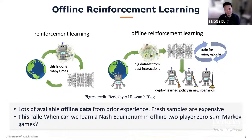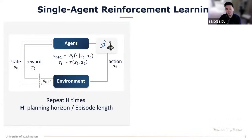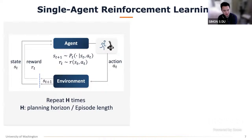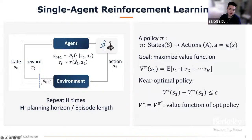Before getting to the two-player setting, let me first review what we know about offline single-agent reinforcement learning. In single-agent RL, we are controlling an agent interacting with the environment. At each time step, the agent is at some state s_t, takes some action a_t, receives a reward based on the reward function depending on state and action, and the state transitions according to some transition probability p_t. This repeats for H steps per episode, where H is the planning horizon.